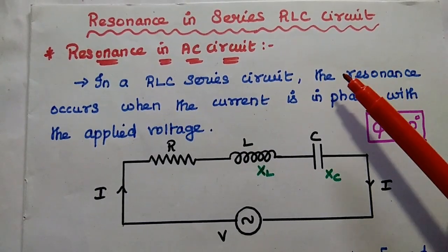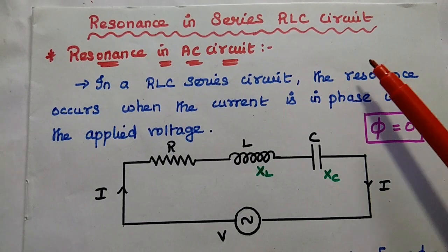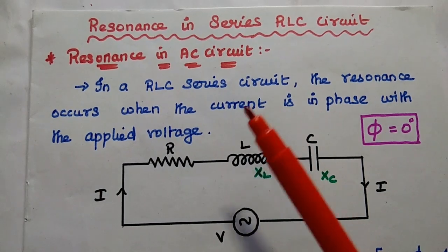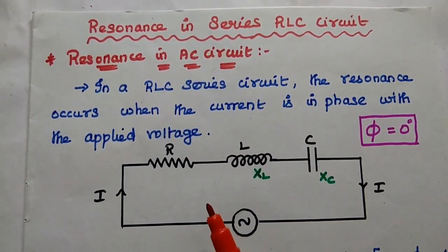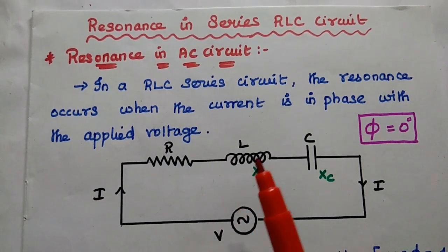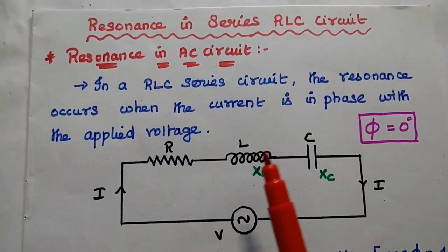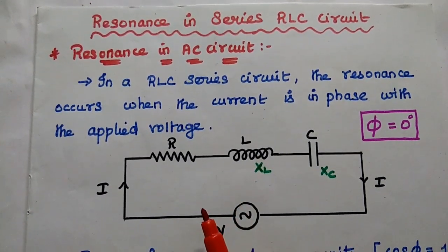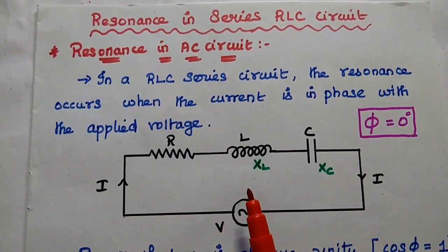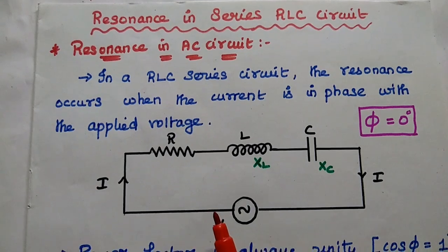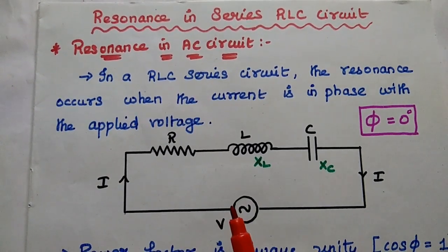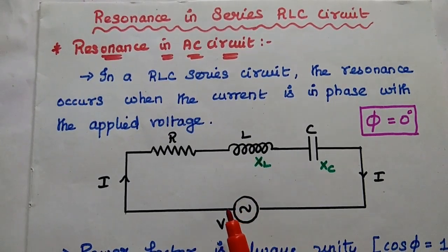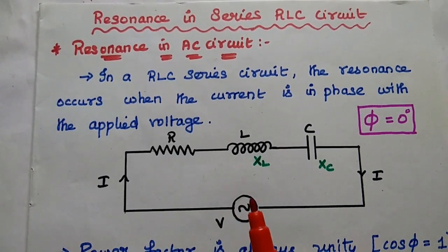Dear students, now we are going to discuss the resonance in series RLC circuit and its characteristics in detail. In any AC circuit, the resonance occurs only at a particular frequency that is known as resonant frequency. At that certain frequency, the AC circuit can act as a purely resistive circuit, meaning it has minimum impedance and maximum power is transferred. That is called resonance.